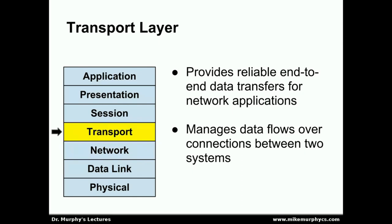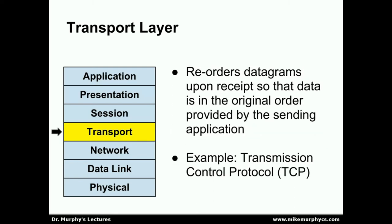The transport layer sits above the network layer and provides reliable end-to-end data transfers for network applications. It is responsible for managing data flows over connections between two systems, and in many cases ensures a certain amount of reliability in the communication. One thing the transport layer typically does is reorder datagrams upon receipt so that data is in the original order provided by the sending application, reassembling datagrams so that higher layers see the same data stream that was transmitted. The ubiquitous example of the transport layer is the Transmission Control Protocol, or TCP.